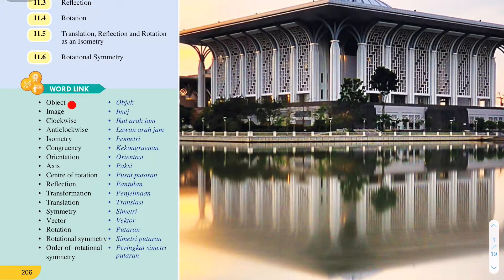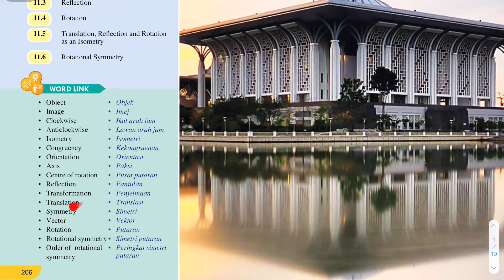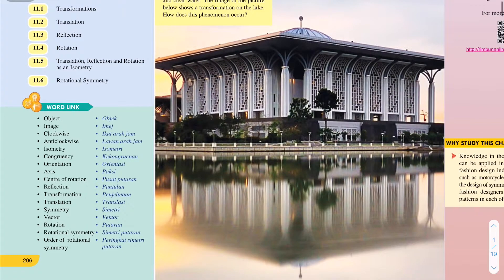Before that, there are a few word links that you need to know: object, image, clockwise, anti-clockwise, isometry, congruency, orientation, axis, center of rotation, reflection, transformation, translation, symmetry, vector, rotation, rotational symmetry, and order of rotational symmetry. We're going to learn these words in this chapter.